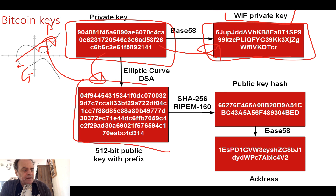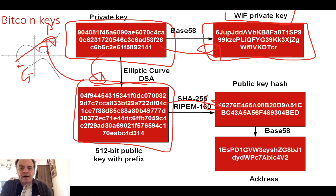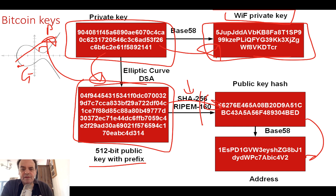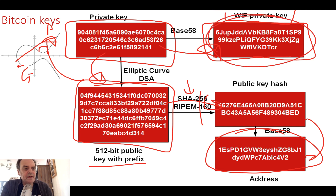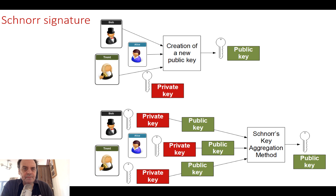After that we create a hash of the public key using two hashing methods, and then eventually we convert that into our public address. This is the address that we would advertise, and the private key is what we want to keep secret.